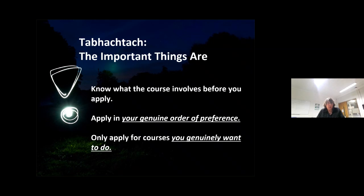Whatever course you apply for, depending on how many more people are applying for that same course in the same college, they will take the top number of students that have applied for that course, and that will determine what the points are for that particular course in any year. But it's extremely important that your son or daughter knows the course and what it involves before they put anything down on their CAO. Apply in genuine order of preference, and only apply for a course that you are genuinely going to take. Don't just jot for the sake of filling out — they might put down 10 courses but not have a clue about half of them. So it's very important that they research, research, research.